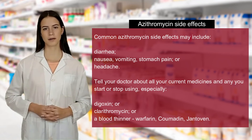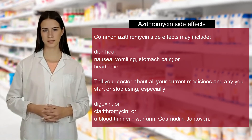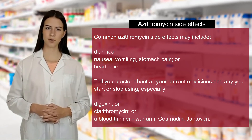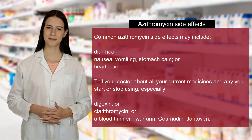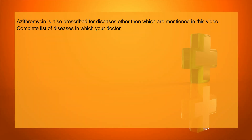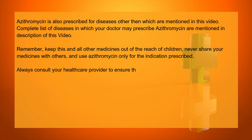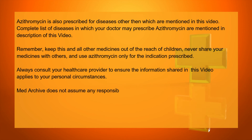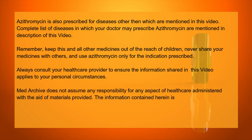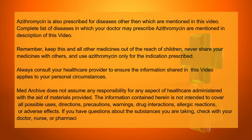Tell your doctor about all your current medicines and any you start or stop using, especially digoxin, clarithromycin, or a blood thinner such as warfarin (Coumadin, Jantoven). Azithromycin is also prescribed for diseases other than those mentioned in this video. A complete list of diseases for which your doctor may prescribe azithromycin is mentioned in the description of this video. Keep this and all other medicines out of the reach of children, never share your medicines with others, and use azithromycin only for the indication prescribed.